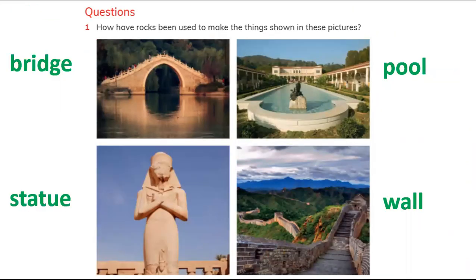Here are four things we can make using rocks. The first question is: how have rocks been used to make the things shown in these pictures? As I already explained — bridges, pools, statues, and walls are all made from rocks.